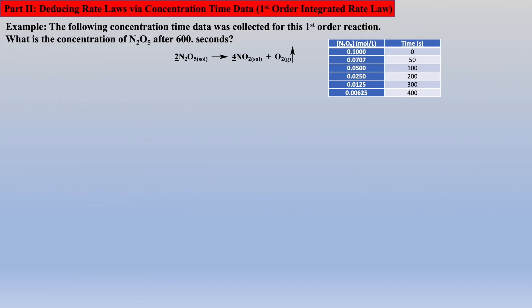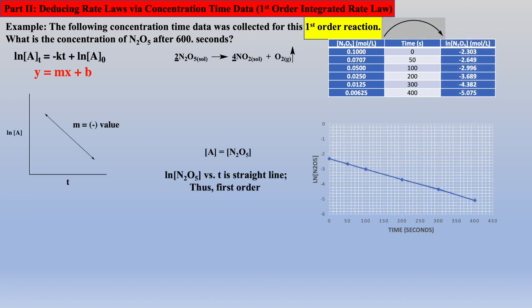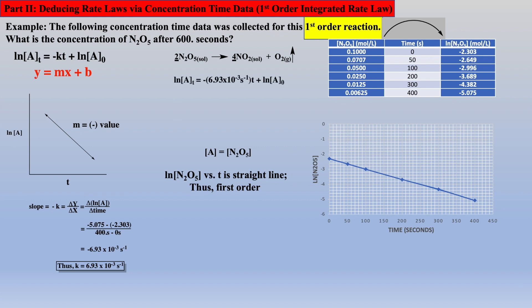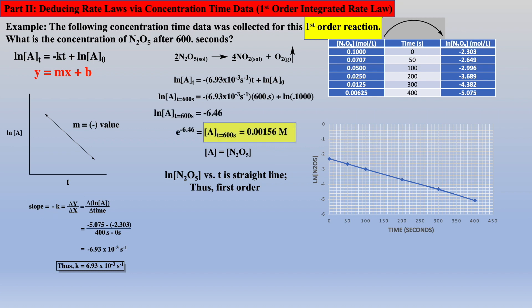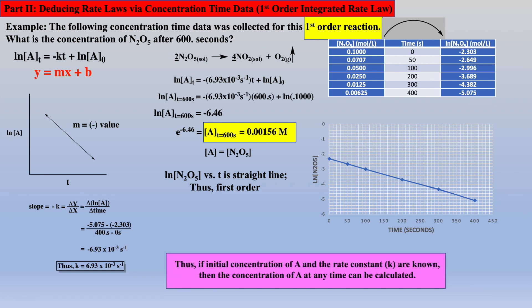Another type of question that could be asked is, what will the concentration be at some time T? In this example, we already know the reaction is first order, and therefore it will follow the first order linearized equation. We have already demonstrated that the plot of natural log of N2O5 concentrations versus time will produce a straight line with the negative of the slope equal to the rate constant. Thus, we can use this straight line to extrapolate out to 600 seconds to determine the concentration of N2O5. Plugging the rate constant, as well as time at 600 seconds, and initial concentration will yield the concentration of N2O5 at 600 seconds. If the initial concentration and rate constant are known, the concentration of reactant can be calculated at any time T.